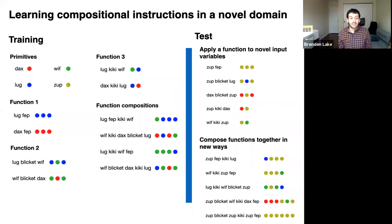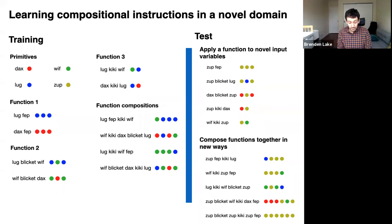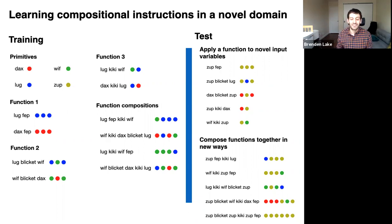Here's the complete training and test we gave human participants. During training, there were four different primitives, three different functions, and then compositions of functions — 14 sequence-to-sequence patterns overall. At test time, participants were asked to apply a function learned from a few examples to novel input variables. We verified that a standard sequence-to-sequence neural network trained on just 14 patterns performs extremely poorly — single-digit generalization accuracy — because these models aren't meant for such small datasets. Nevertheless, people are able to handle it.